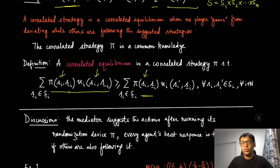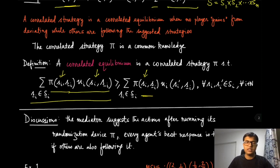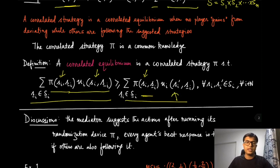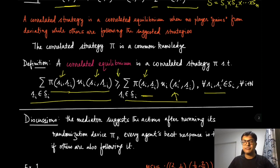Whether you pick si-prime or something else does not change the outcome of the randomization device; that is why on the right-hand side you also expect with respect to the same si and s-minus-i. On the left-hand side, the only thing you can change is your choice of si and the resulting utility. You take expected utility because you know what has been suggested to you — si — but you do not know what has been suggested to other players. You compute expected utility when following si and when deviating to si-prime. The correlated equilibrium says you will never be better off by not following si, and this inequality must hold for all si, si-prime, and all players i.